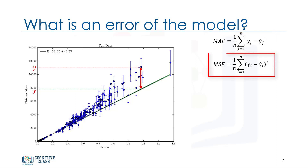Mean squared error is the mean of the squared error. It's more popular than mean absolute error because the focus is geared more towards large errors. This is due to the squared term exponentially increasing larger errors in comparison to smaller ones.